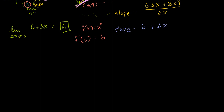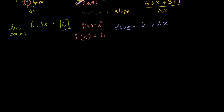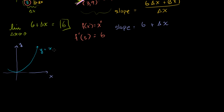So let me redraw my function here. That is my y-axis, and that is my x-axis. Let me draw my curve — it looks something like that. This is y equals x squared.